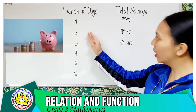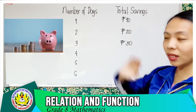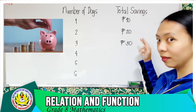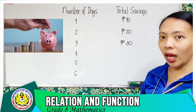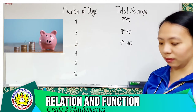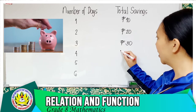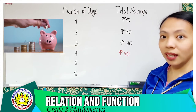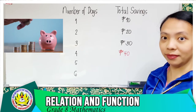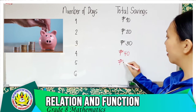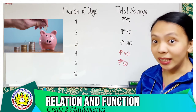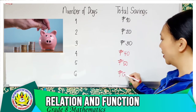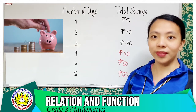In the first day she will save 10 pesos, in the second day 20 pesos, in the third day 30 pesos. I hope you see a pattern. Therefore, in the fourth day, how much will be saved? It is 40 pesos. In five days she would save 50 pesos, and in the sixth day she would save a total of 60 pesos.